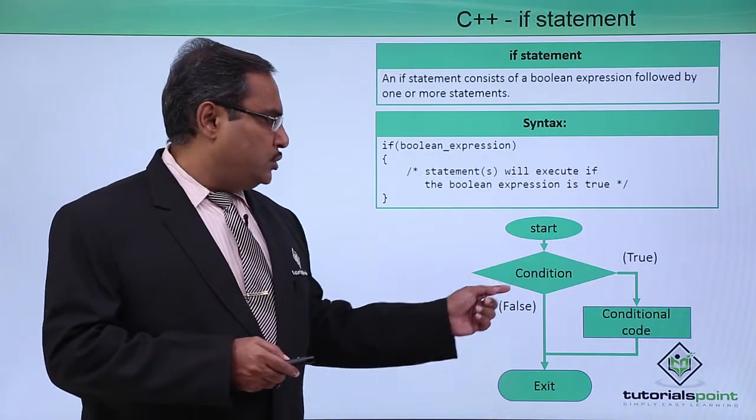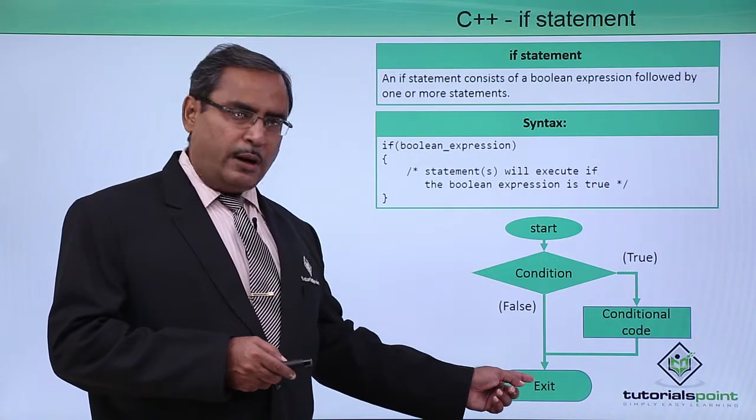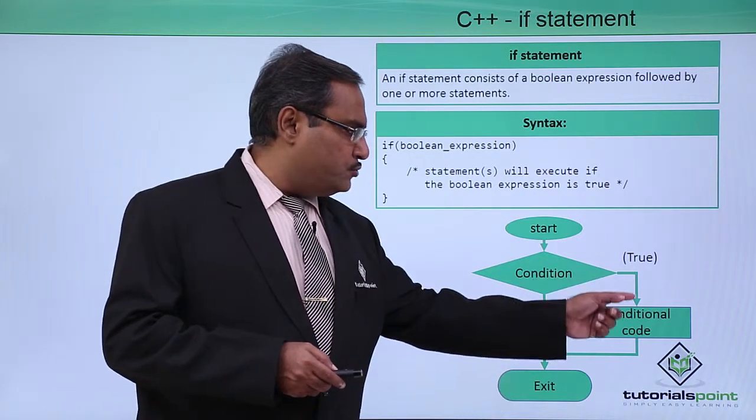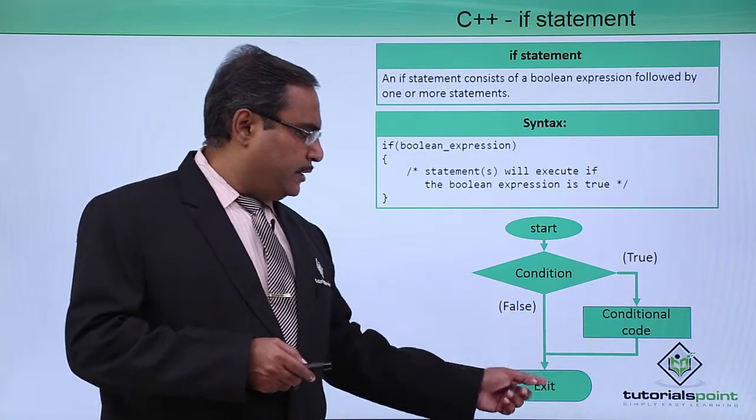This is the respective flowchart. The condition will be tested. If the condition is false, then nothing will be executed and it will come out. Otherwise, if the condition is true, then these conditional codes are to be executed and then it will come to the exit.